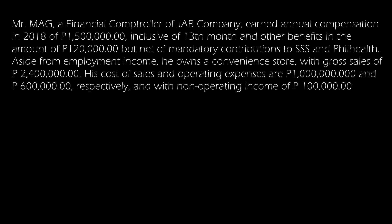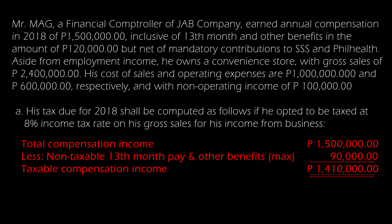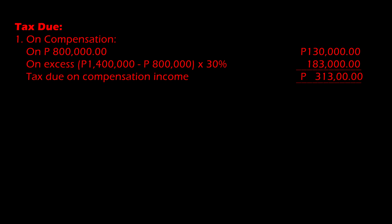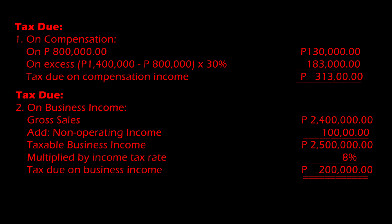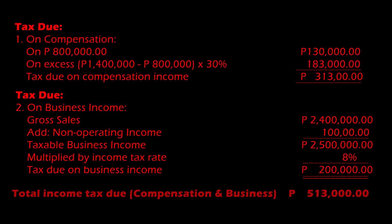In our last illustration, the taxpayer is a mixed income earner. For 2018, if he opted to be taxed at 8% on gross sales for his business income, the compensation income is subject to the graduated income tax table, while business income is computed separately: gross sales of ₱2.4 million plus non-operating income gives taxable business income of ₱2,500,000, multiplied by 8%, for a tax due on business income of ₱200,000. Adding the tax due on compensation income and business income gives a total income tax due of ₱513,000.